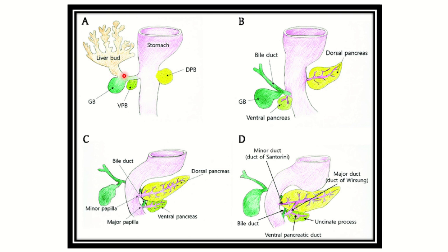In the third picture showing complete development of the pancreas, we can see the dorsal pancreatic bud, the ventral pancreatic bud, and the gallbladder and liver bud. The ventral pancreas undergoes rotation — after complete rotation, the ventral pancreas lies in the lower part while the dorsal pancreas lies in the upper part.